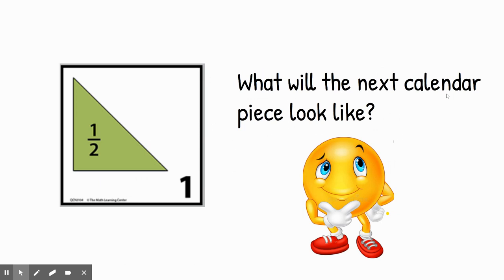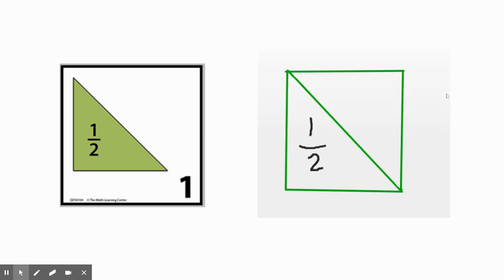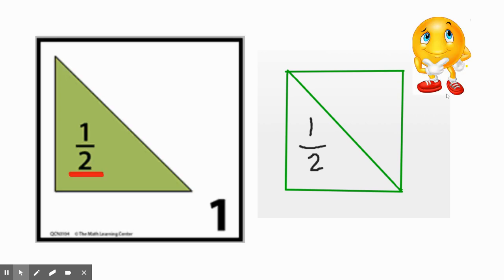But we were taking a look at the first calendar pieces, and we were predicting what the next calendar piece will look like. Several students predicted it would look like this, and some of you wondered, why would they say that? How did they predict that?